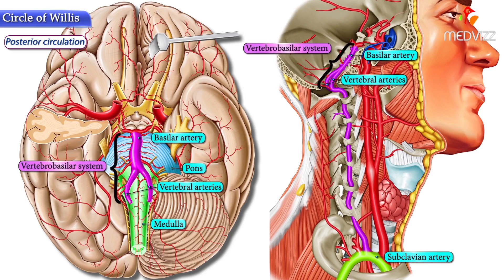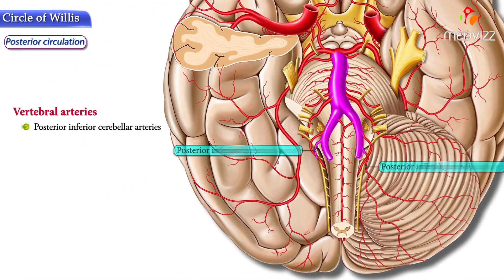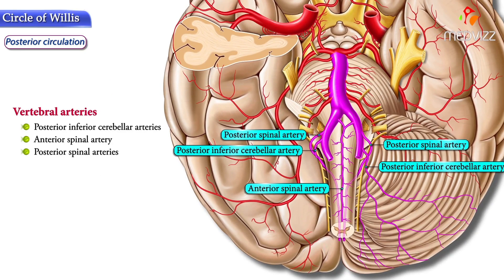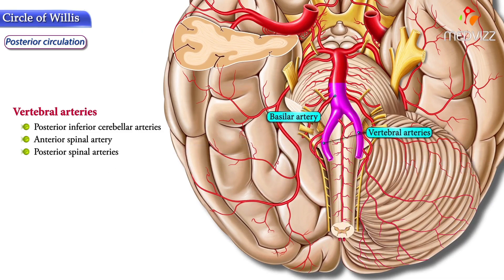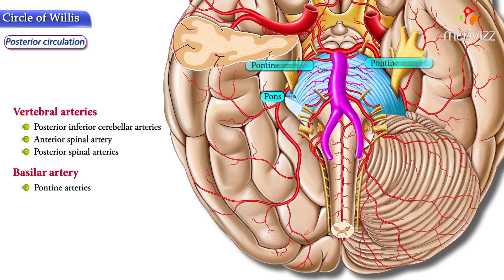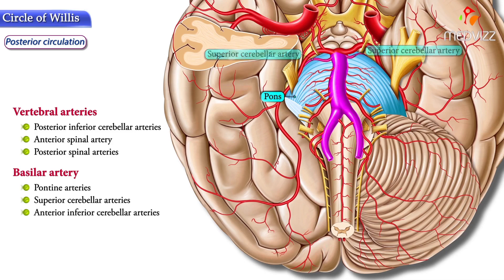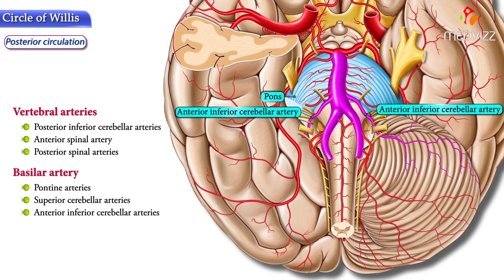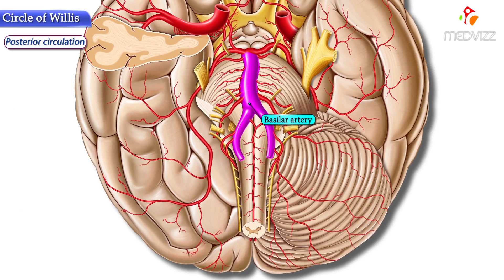The vertebral arteries unite at the lower border of the pons, forming a single artery called the basilar artery, thereby forming the vertebral basilar system. The vertebral arteries also give off the following branches: the posterior inferior cerebellar arteries, anterior spinal arteries, and posterior spinal arteries. The basilar artery runs upwards in the midline, ventral to the pons, giving off pontine branches, superior cerebellar arteries, and anterior inferior cerebellar arteries, before finally terminating by bifurcating into the right and left posterior cerebral arteries.